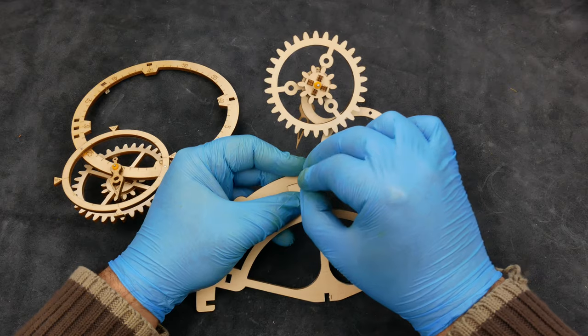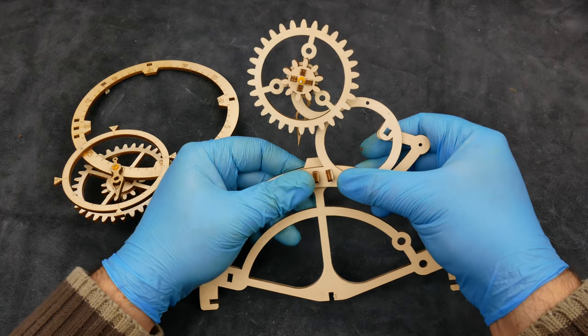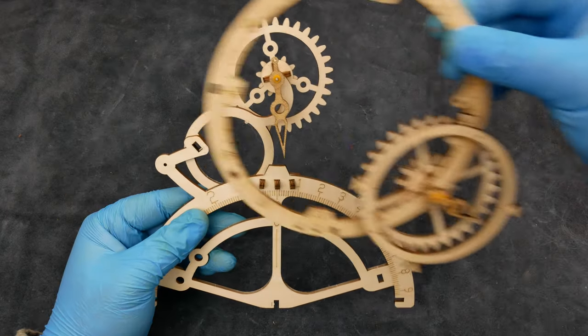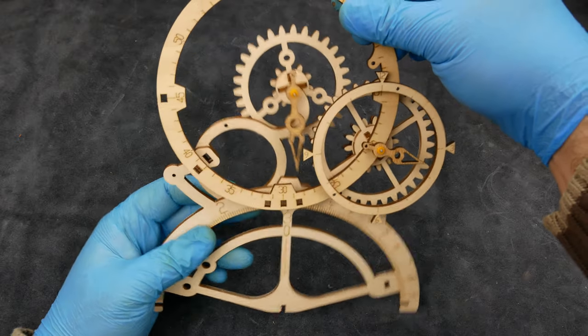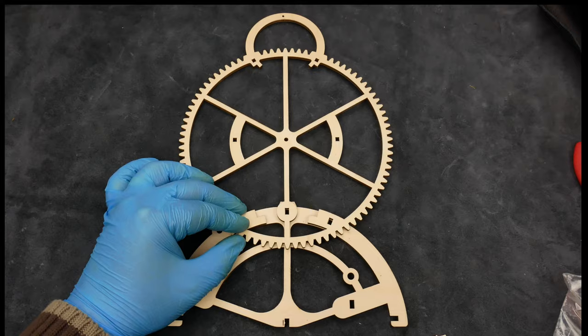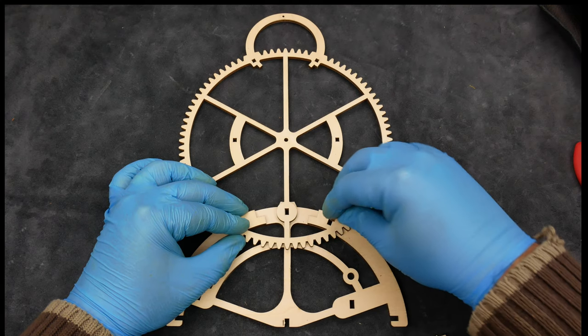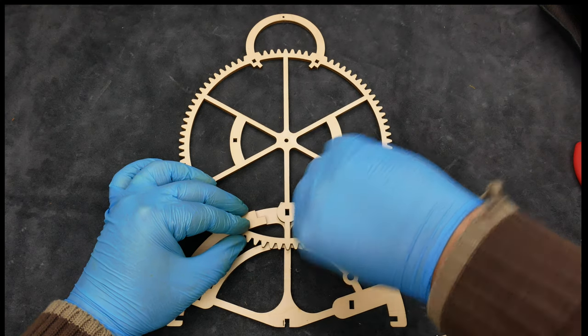Next, these bits of frames now peg together and then we end up with the complete front face of the clock. The other part of the frame that needs assembly goes together in the same way.